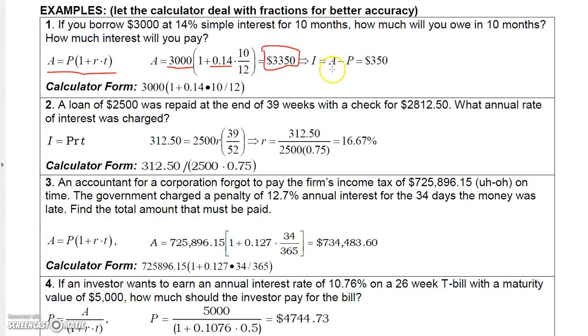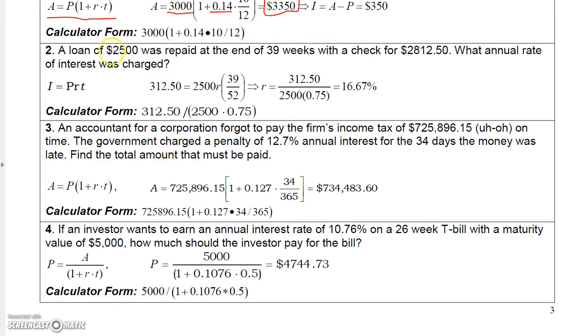And if for some reason you wanted the interest, you just subtract 3,000 from this and you get the interest is $350. This one says a loan of 2,500 was repaid at the end of 39 weeks with a check of $2,812.50. What annual rate of interest was charged?